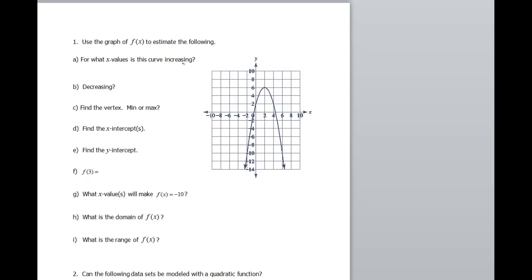For what x-values is this curve increasing? So this arrow means it's gonna keep going forever. So if I were to start at the left of this graph, it's gonna be increasing until it hits that vertex, which looks like an x-value of 2. The y-value is 6, but again, it asks for the x-values. So I'm gonna write this as negative infinity to 2, or you can say x is less than 2.